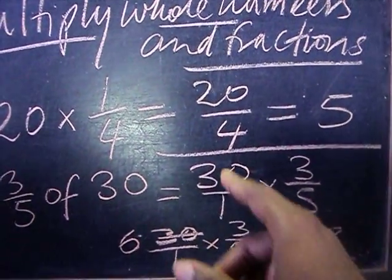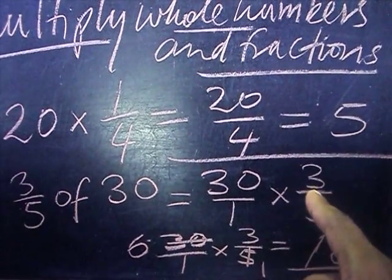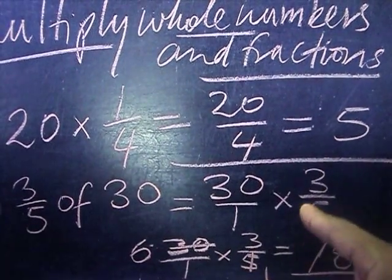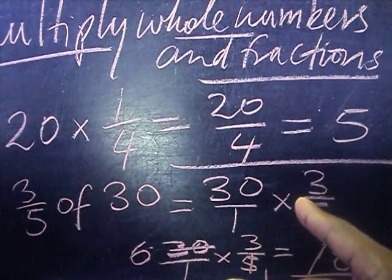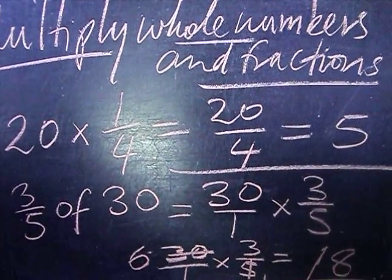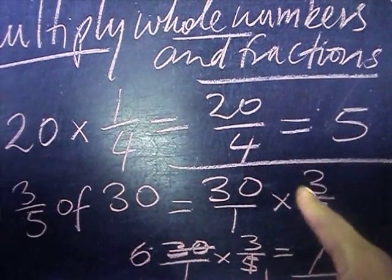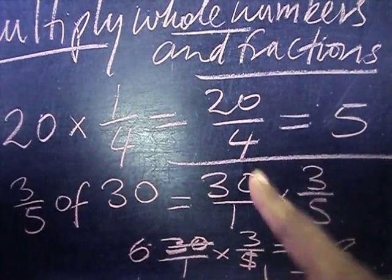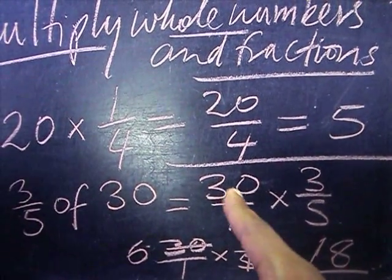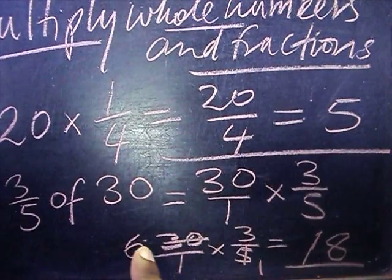In working this out, I can multiply the 30 times the 3 and then divide it by 5, but I choose to do it a different way. I choose to do it in the process of cancellation, the cancellation process. So three-fifths of 30 is three-fifths times 30. 5 into 5 is 1, and 5 into 30 that's 6.